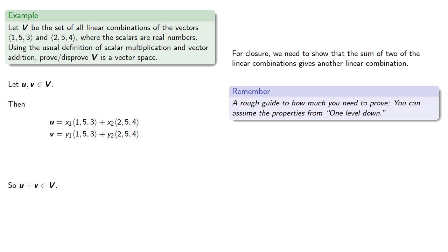So if I add u and v on the left, I don't know what I'm going to get. But because the right-hand side is one level down, we can use our standard rules for vector addition. And notice now that u + v is (x₁ + y₁)(1, 5, 3) + (x₂ + y₂)(2, 5, 4). So u + v is also a linear combination of (1, 5, 3) and (2, 5, 4), so u + v is an element of V.